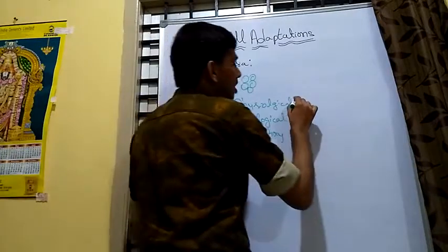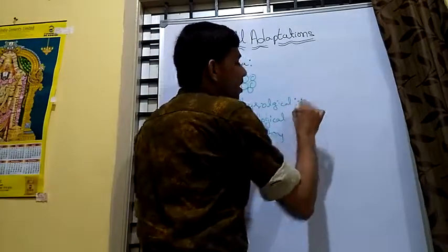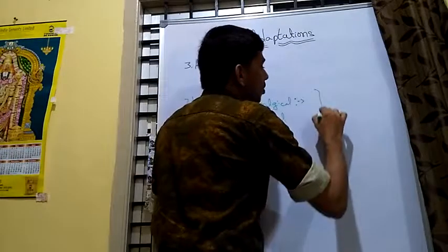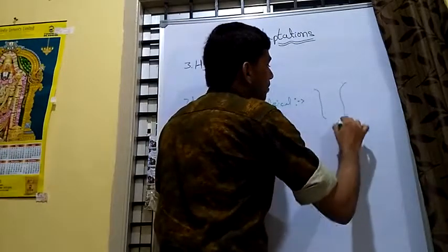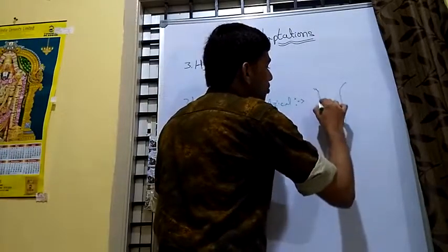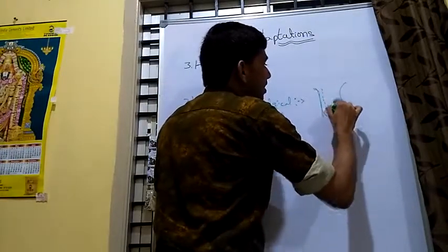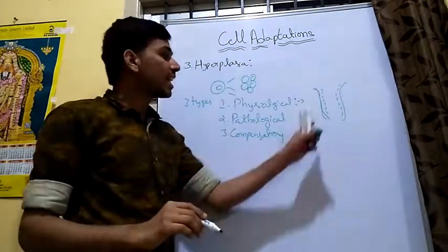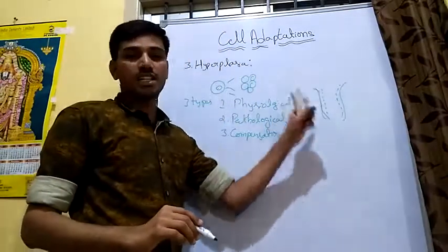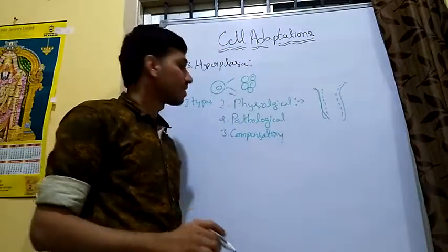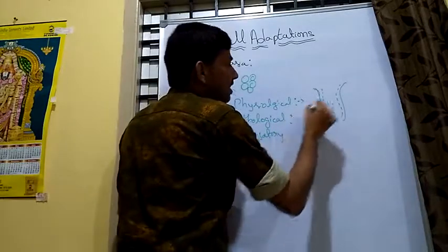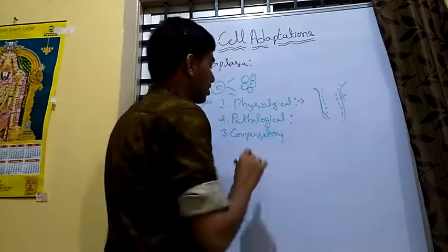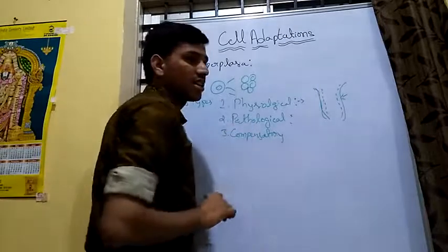In physiological hyperplasia, it is seen in the proliferative phase of the menstrual cycle — the cells of the menstrual lining increase in number during the proliferative phase. Physiological hyperplasia is a normal or common physiological phenomenon.